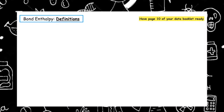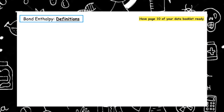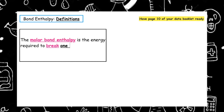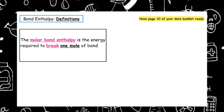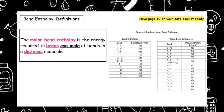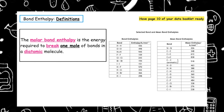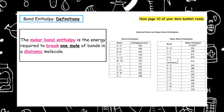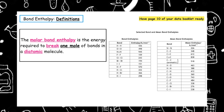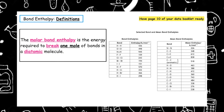There are a couple of key definitions we have to know. The molar bond enthalpy is the energy required to break one mole of bonds in a diatomic molecule. If you use page 10 of your data booklet you can see that the first set of data talks about bond enthalpies, showing a range of diatomic molecules and the energy required to break those bonds.